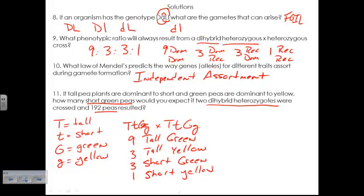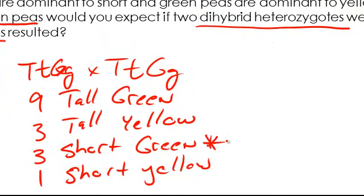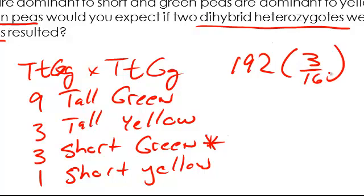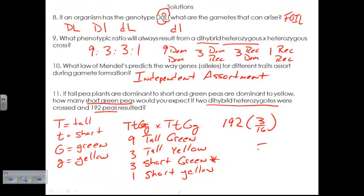So in this problem we know our ratios, we know that there are sixteen possible outcomes here, and we know that we're looking for short green peas, which is this one here. So the way we would solve this problem is take the number given, which is 192, and multiply that by three sixteenths, or multiply it by three and divide by sixteen. And what you end up with for this is thirty-six, you should have thirty-six short green peas if this is the cross that's done.